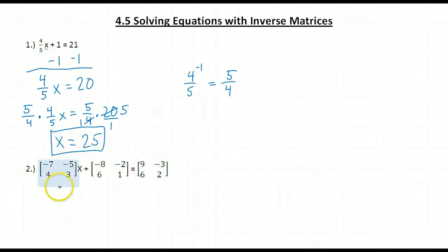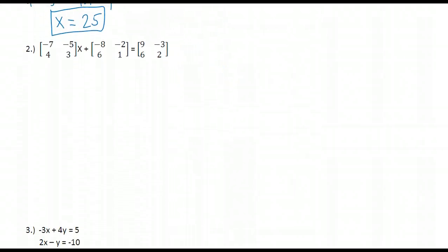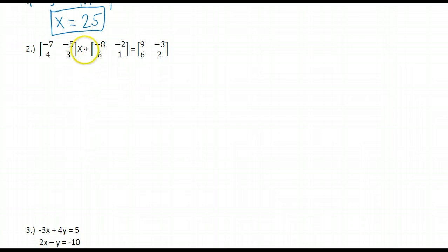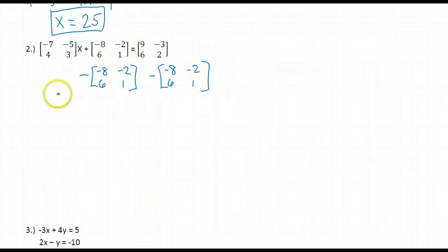Let's apply that idea to problem number 2. If I want to solve for x, I need to undo the things that are happening to x. I'm going to have to undo being multiplied by this matrix and undo adding this matrix. To get rid of adding this matrix, I just need to subtract it from both sides.